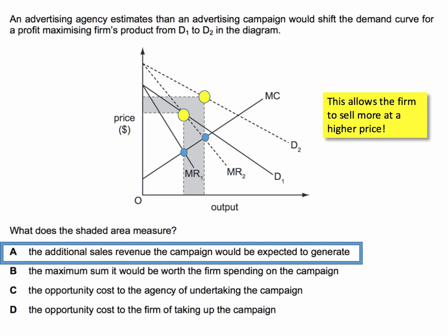Much higher price. So the total revenue for the firm will have increased because total revenue is price per unit multiplied by output. Hopefully you've got the right answer to that question. Check out some more revision questions on the website.